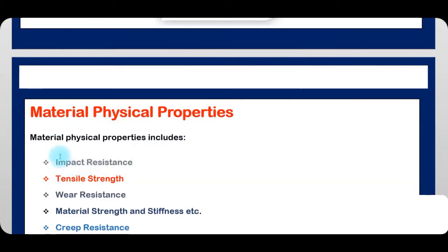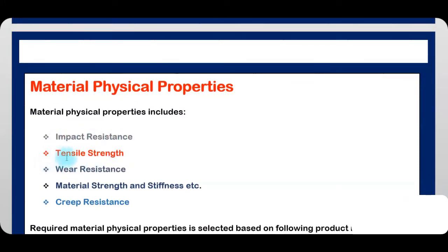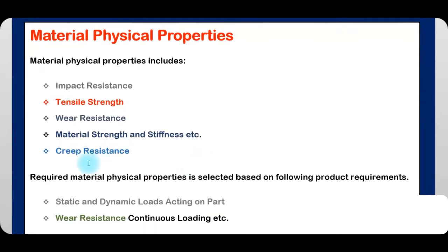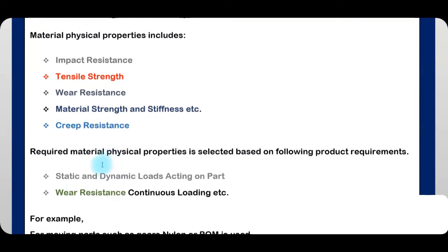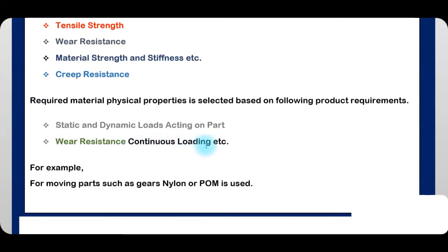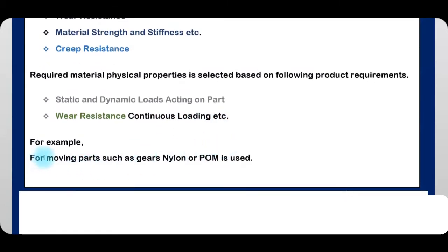Material physical properties include impact resistance, tensile strain, wear, material stiffness, and creep resistance. The required physical properties are selected based on the following product requirements: first, static and dynamic loads acting on the part; second, wear resistance and continuous loading. For example, for moving parts such as gears, nylon or POM is used.